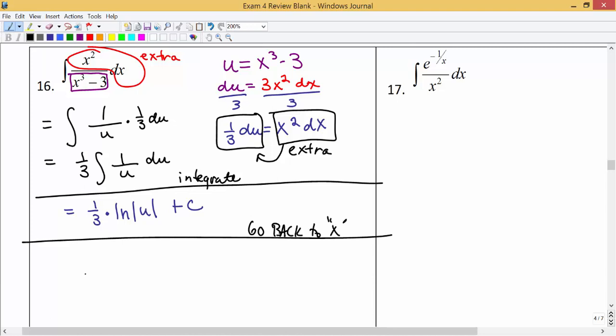I'm going to go back to the original variable x that was used. So I'm going to replace u with what we originally let u equal, and that was the x cubed minus 3. So we're going to put x cubed minus 3 right there as the input on that ln function.